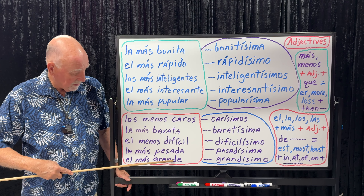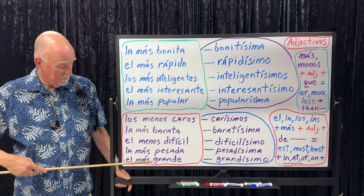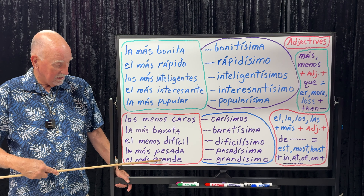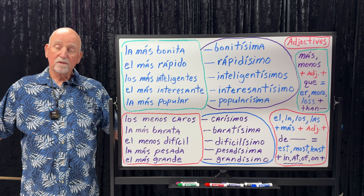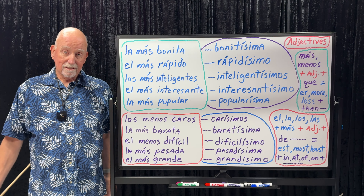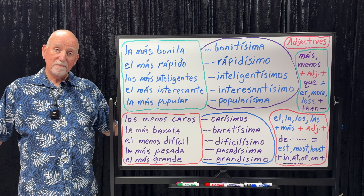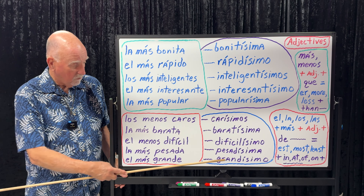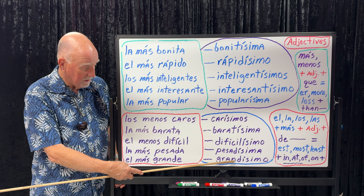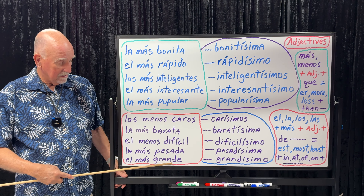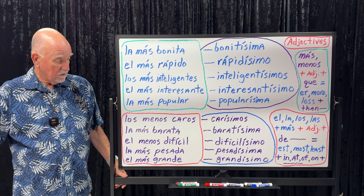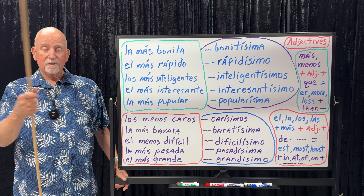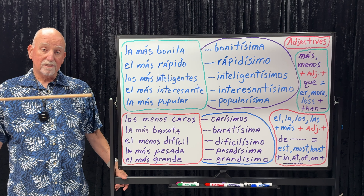Grande — big. Bigger is más grande. Biggest is el más grande. It could also be la más grande, or los/las más grandes, depending on what is big. And the absolute superlative form is grandísimo. The -ísimo or -ísima always agrees with the noun that you're referring back to — that's very, very important.